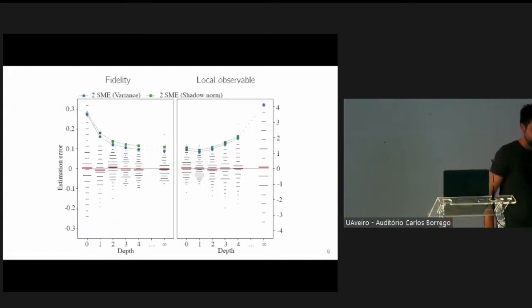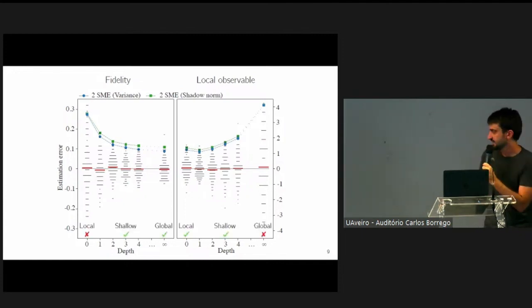Finally, I want to show you a plot. Here we have, on the left, a fidelity estimation, and on the right, a local observable estimation. I show the estimation error as a function of depth. You can see that depth zero corresponds to the local scheme, and depth infinity corresponds to the global scheme. The global scheme is very good at estimating the fidelity, while the local scheme is very good at estimating the local observables. Our shallow scheme in between seems to already reproduce the same performance of the global scheme after quite a short depth, while it preserves the good performance for the local observable still at the same depth.